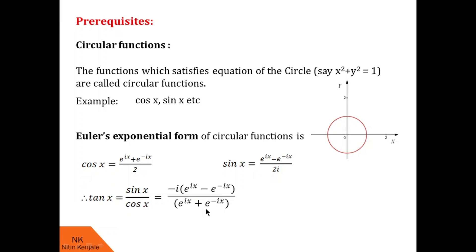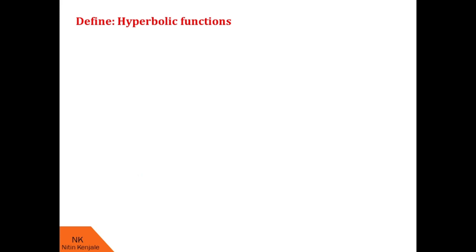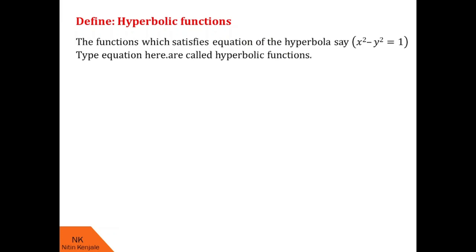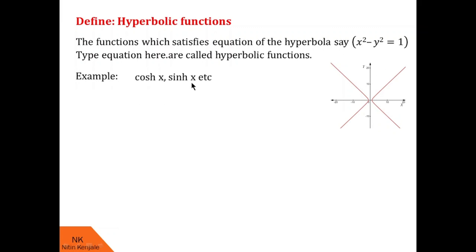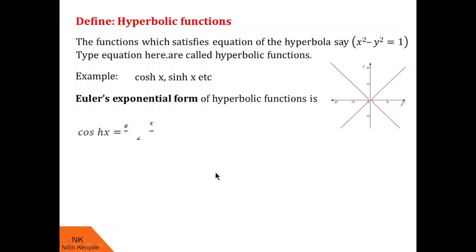Now let us proceed with the definition of hyperbolic functions. Hyperbolic functions are defined similar to circular functions. They are the functions which satisfy the equation of a hyperbola: x squared minus y squared equals 1. For example, cosh x and sinh x are hyperbolic functions. Euler's exponential form: cosh x is defined as e raised to x plus e raised to minus x upon 2, and sinh x is defined as e raised to x minus e raised to minus x upon 2.